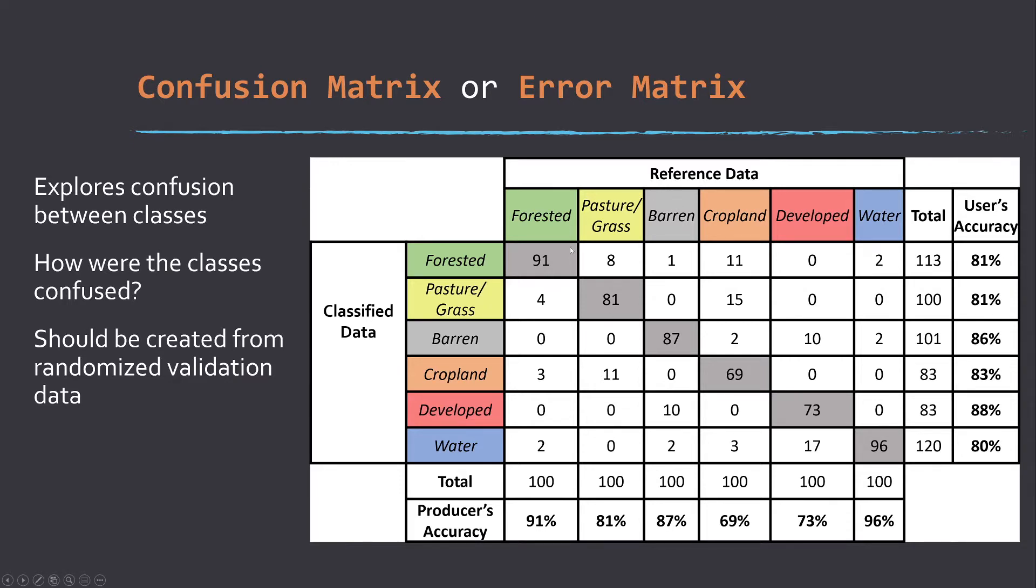This is what we're considering to be correct, and then the rows represent what the prediction was. The cells highlighted here in gray are the count of correct samples. For example, 91 samples were forested and were correctly called forested.